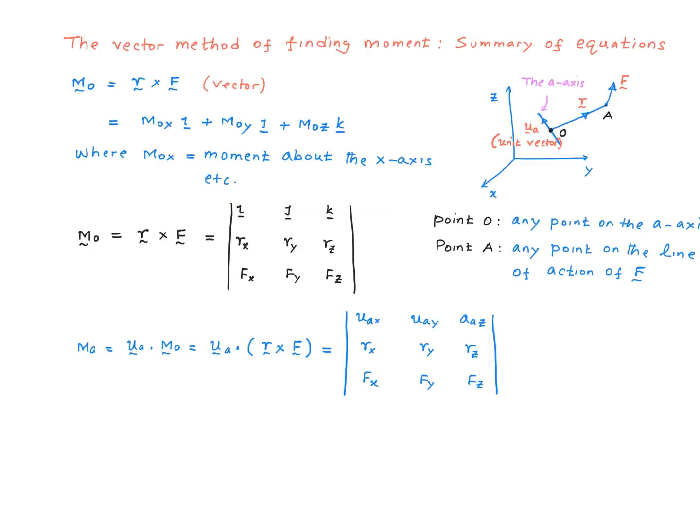Here is a summary of the equations relevant to the vector method of finding the moment of a force. Referring to this picture, moment about point O of this force F is given by this equation: M₀ = R × F. And R × F eventually works out to be in this component form. And here is a method of finding R × F.